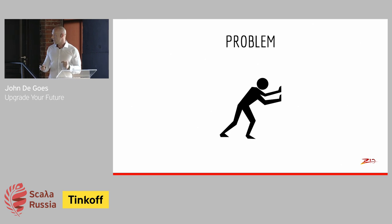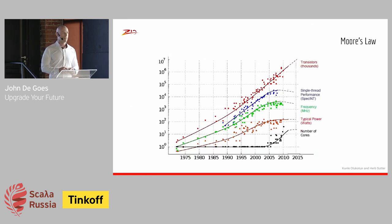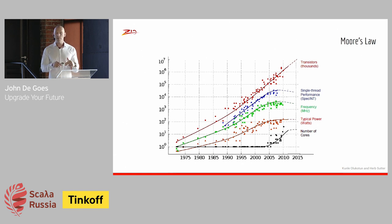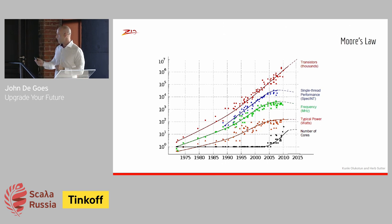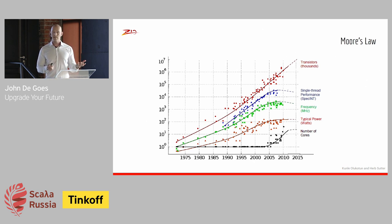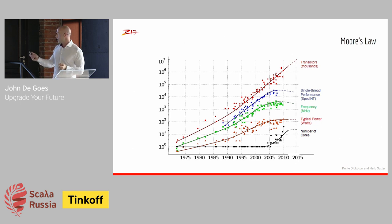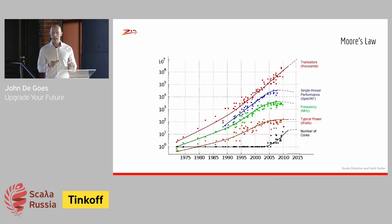My story today begins way back in 2005 — that's about when Moore's Law died. Prior to that point, every two years or so, CPUs would double in speed. That was the good old days when our games got faster and we could afford to write slower code and the CPUs would catch up. But around 2005 they hit the limitations of physical manufacturing and couldn't make CPUs any faster, so instead they started adding more cores.